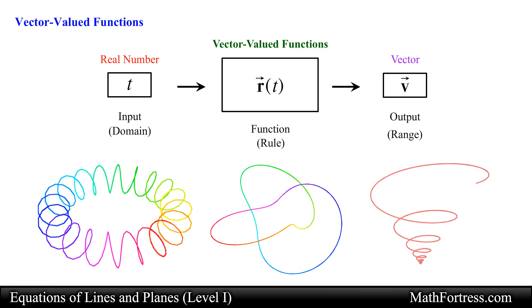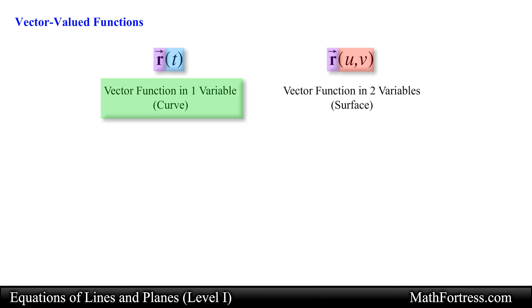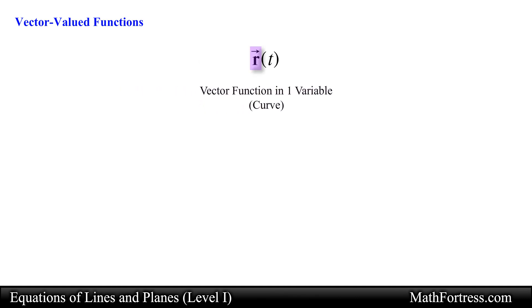We can also use vector-valued functions to describe the motion of objects through space. We usually denote vector functions by using the following notation. A vector function will take one or more variables and return a vector. For the purpose of describing an equation of a curve, we will go over a vector function in one variable. We will cover two-variable vector functions in a much later video. The vector that the function generates can be a vector in whatever dimension we need it to be. For example,